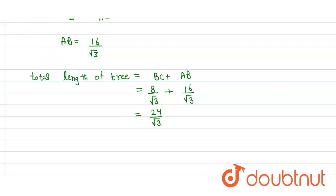We can also further rationalize it by multiplying and dividing by root 3. So here we get 24 root 3 upon 3. So the answer is 8 root 3 meters.